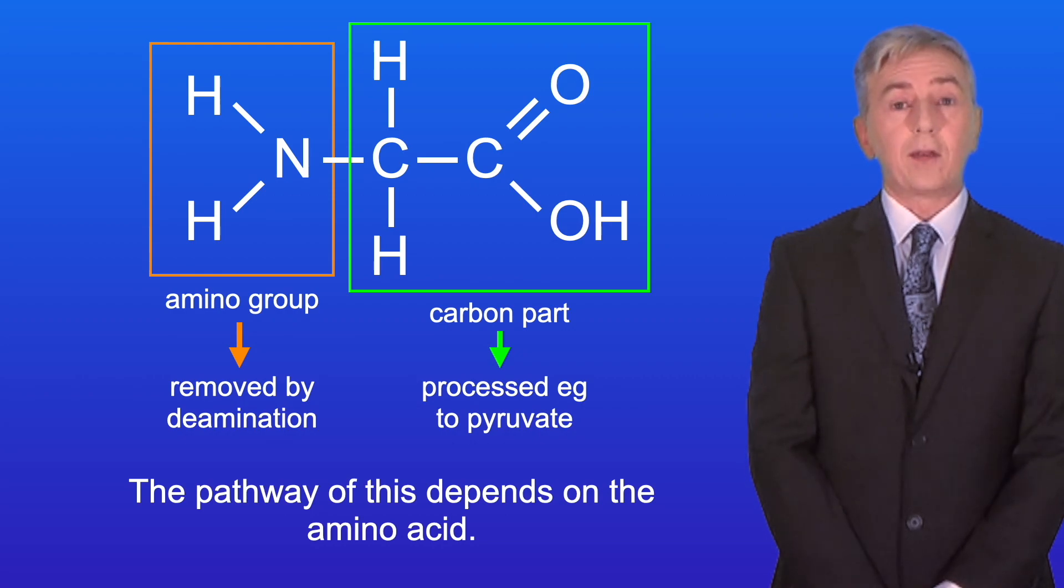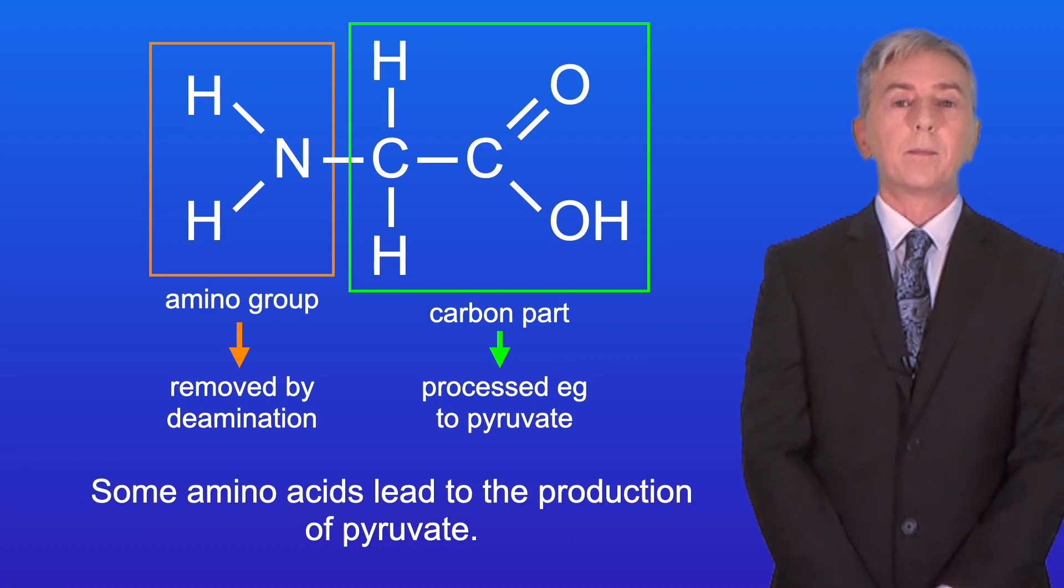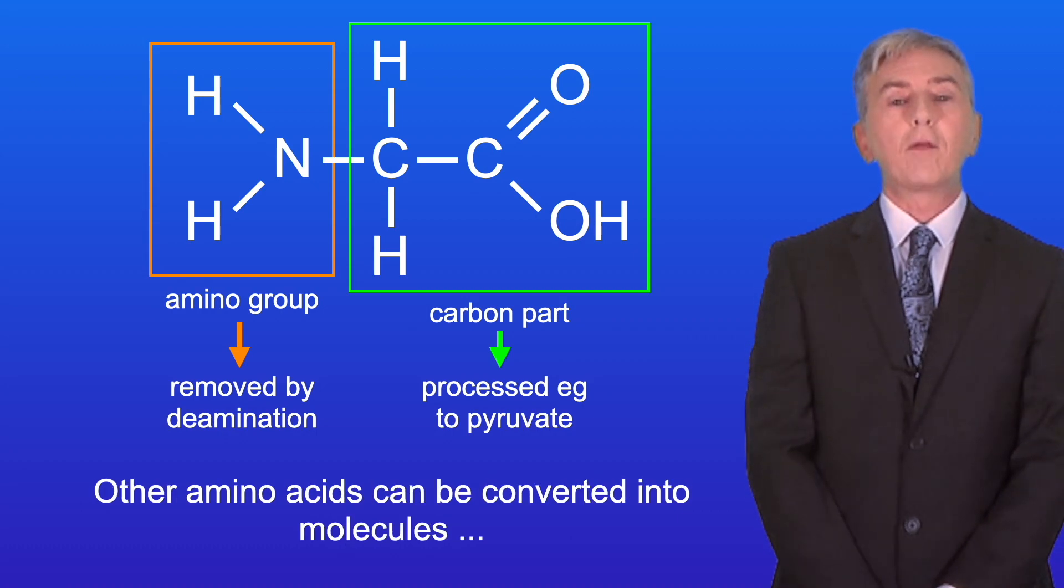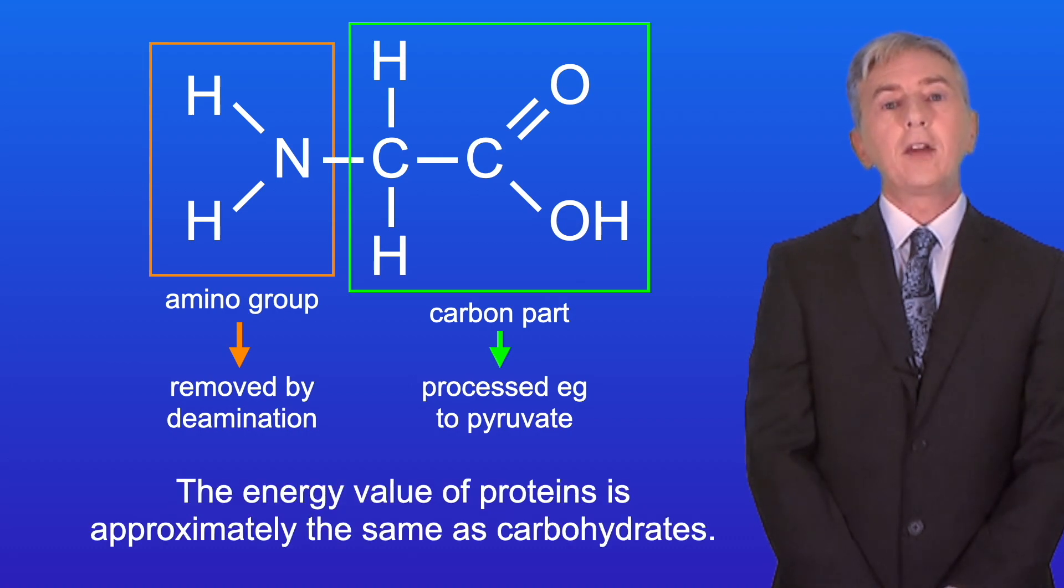Now the pathway of this depends on the amino acid. Some amino acids lead to the production of pyruvate. Other amino acids can be converted into molecules that are part of the Krebs cycle. And the energy value of proteins is approximately the same as carbohydrates.